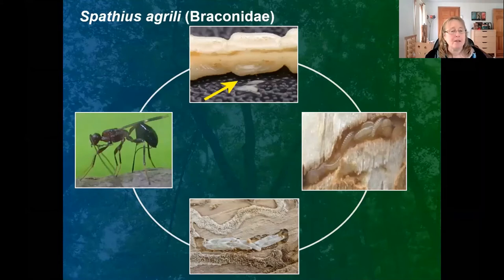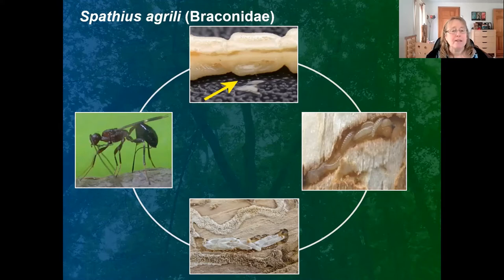The other insect we released early on was Spathius agrili, which can be seen here. Its ovipositor penetrates through the bark and it lays its eggs external to the emerald ash borer — it's an ectoparasitoid. Its larvae feed externally on the emerald ash borer, consuming it, and then eventually form cocoons inside the emerald ash borer gallery.